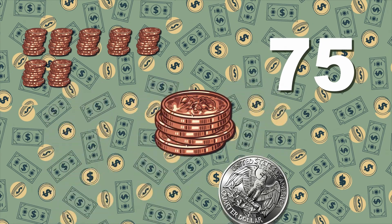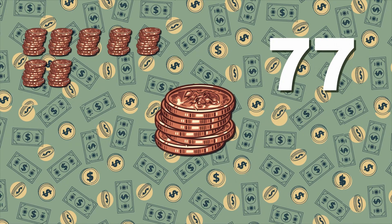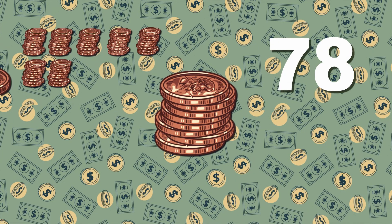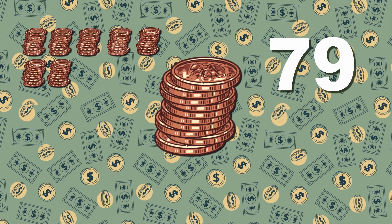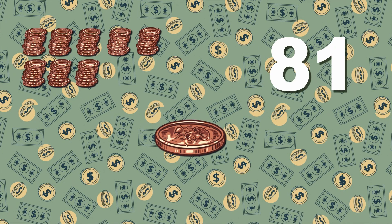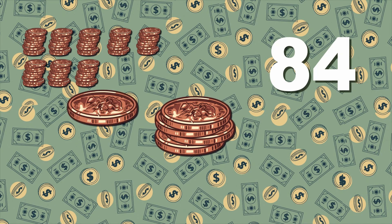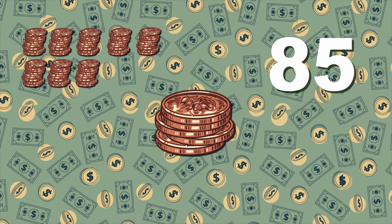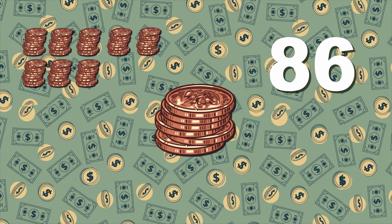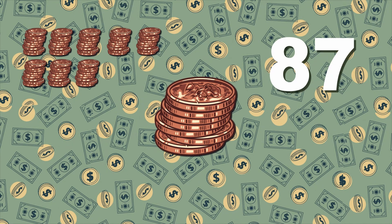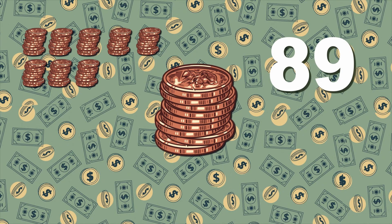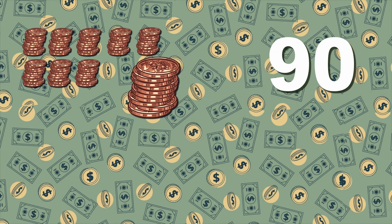76, 77, 78, 79, 80, 81 — are all in a line. 82, 83, 84, 85, 86, 87, 88, 89, 90 pennies.